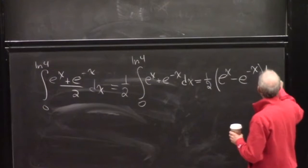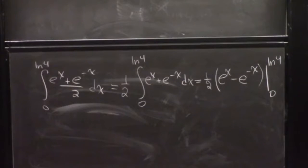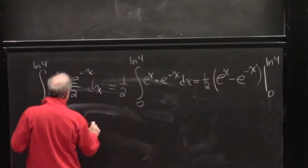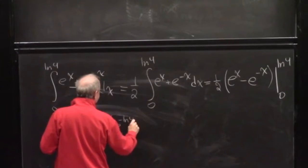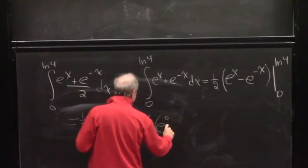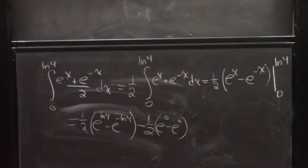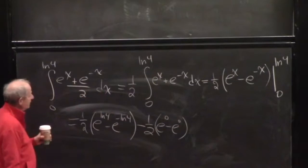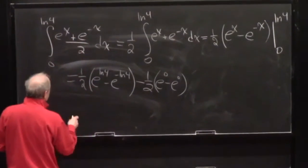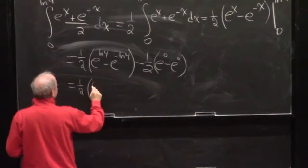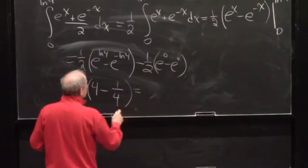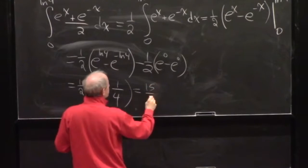Going from zero to natural log of four: e to the log of four is four. This becomes one-half times (e to the log of four minus e to the negative log of four) minus one-half times (e to the zero minus e to the zero). e to the zero is one, so those cancel — the right-hand terms go away. e to the log of four is four, so we get one-half of (four minus one-fourth). You could stop there or simplify to 15/8.